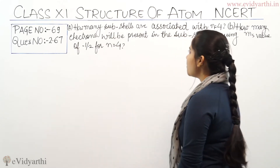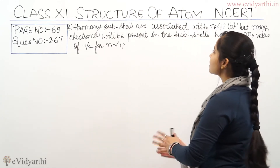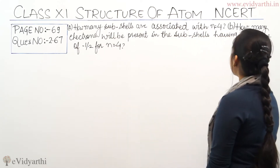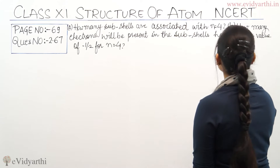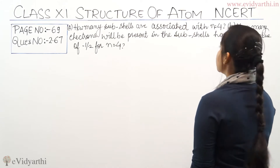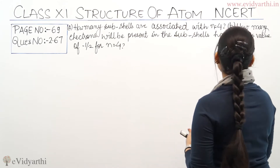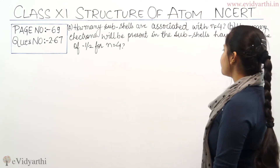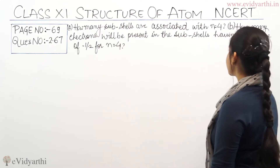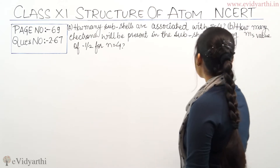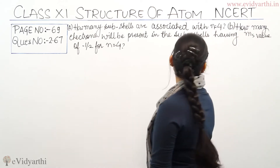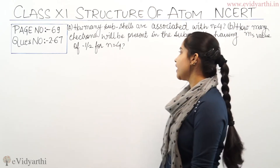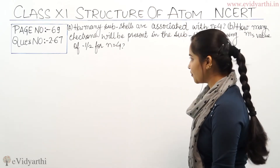The question is: how many subshells are associated with n equals 4? The second part of the question is: how many electrons will be present in the subshells having ms value of minus half for n equals 4?